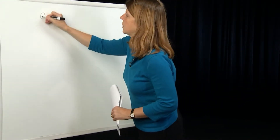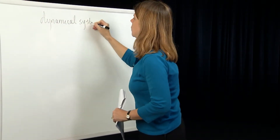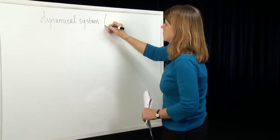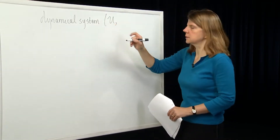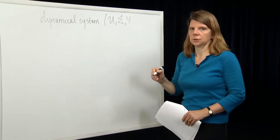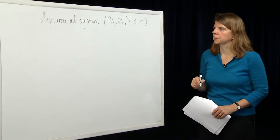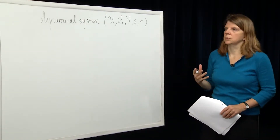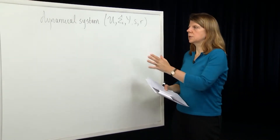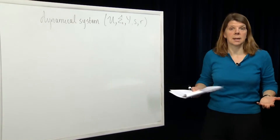In terms of our definition of a dynamical system, we defined it as a group of elements with two associated axioms. It had an input space, a set of input functions, the state space, the output function space, the state transition map, and an output readout map. We have two associated axioms: the state transition axiom and the semi-group axiom. If you're given a system with these components and those two axioms hold, then that's a dynamical system.